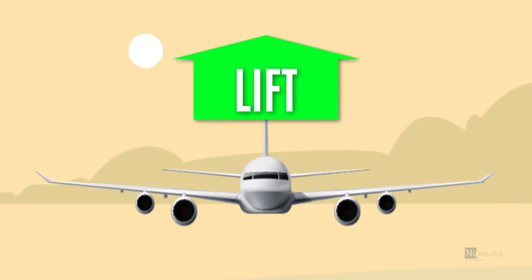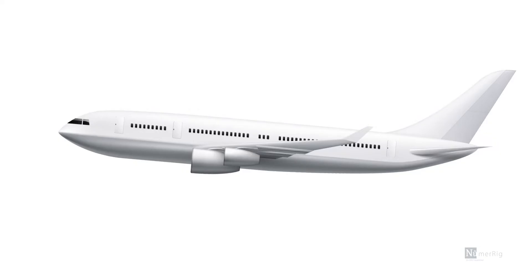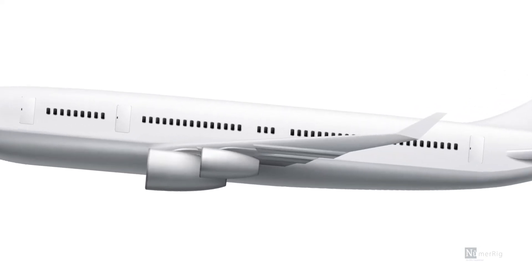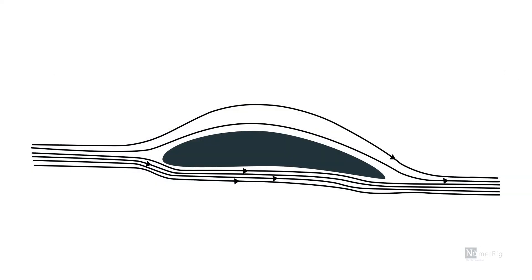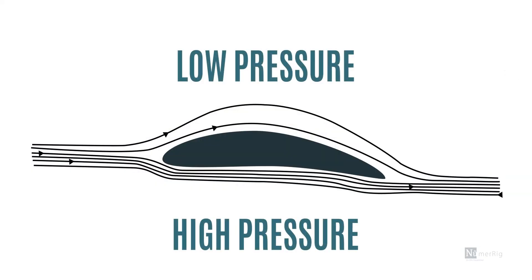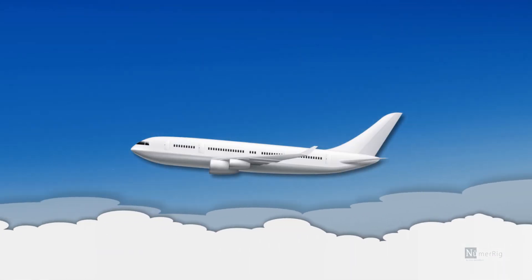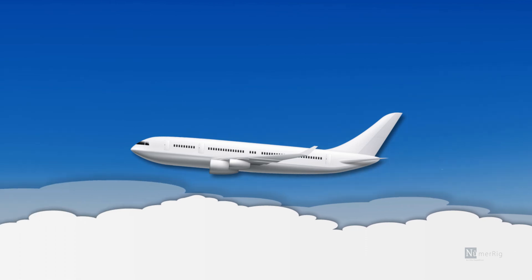Lift is an aerodynamic force that holds an airplane in the air and is created by air moving over the wings. The air moving over the top of the wing is moving faster than the air across the bottom. Thus, lower pressure is created on the top of the wing, and because of this lower pressure, the airplane is able to fly.